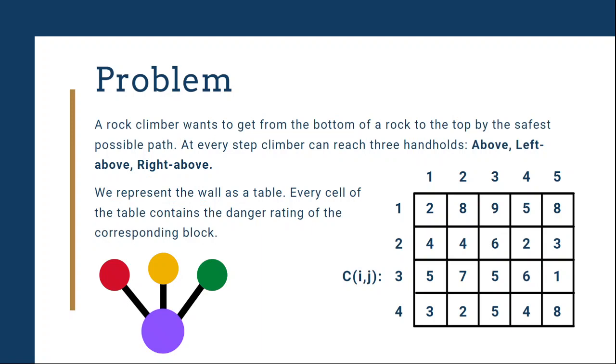A rock climber wants to get from the bottom of a rock to the top by the safest possible path. At every step, the climber can reach three handholds: above, left-above, and right-above. We represent the wall as a table. Every cell of the table contains the danger rating of the corresponding block.